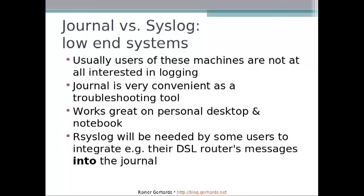A good thing here is that the systemd status messages contain all the journal entries related to the process in question, which is probably very convenient. What we expect is that users would like to have some extra information in their journal logs — and the most important use case is their DSL router's syslog messages. The journal doesn't accept syslog natively, nor all the other protocols that RSyslog accepts natively. So you can actually use RSyslog as a bridge, accepting messages from the network and writing them to the journal files.